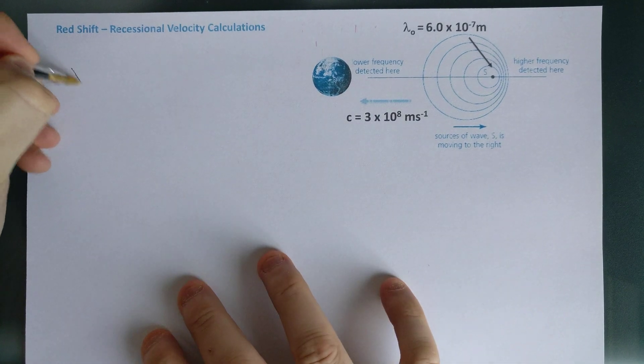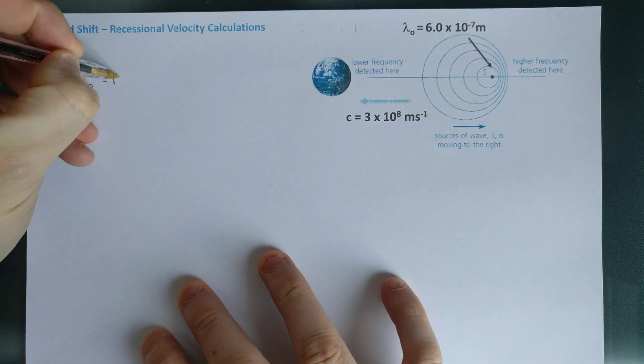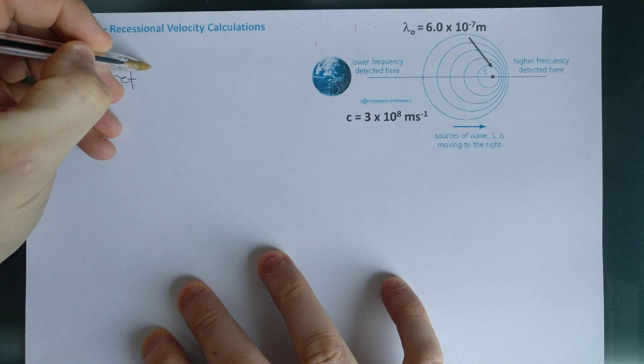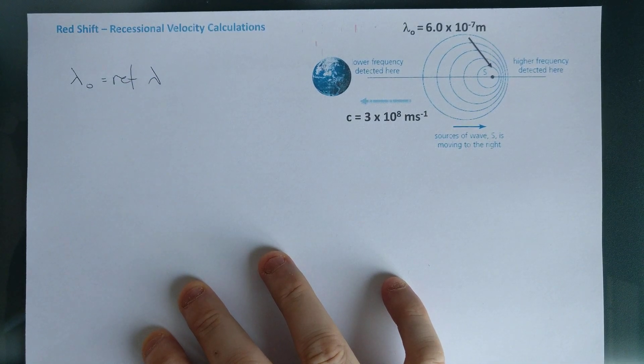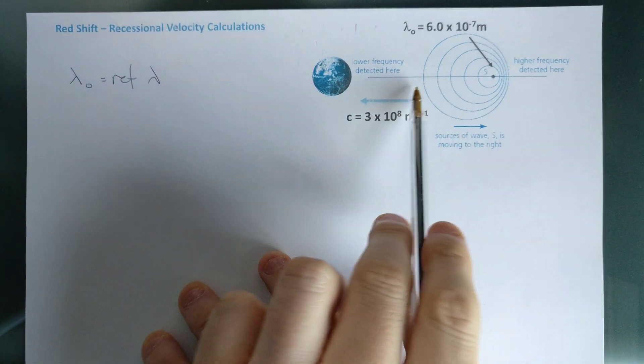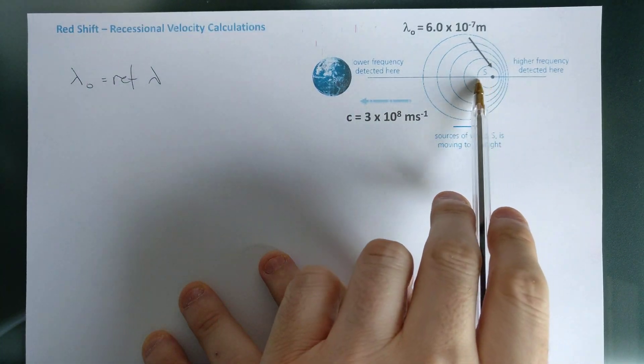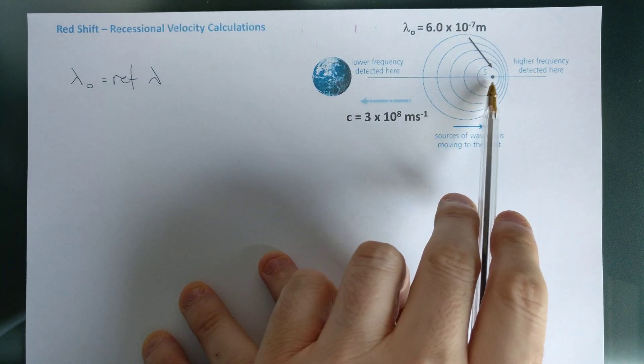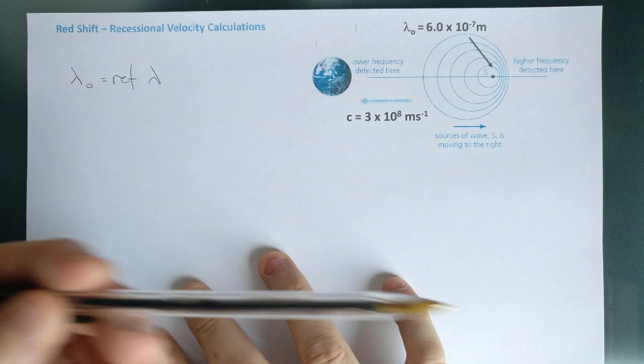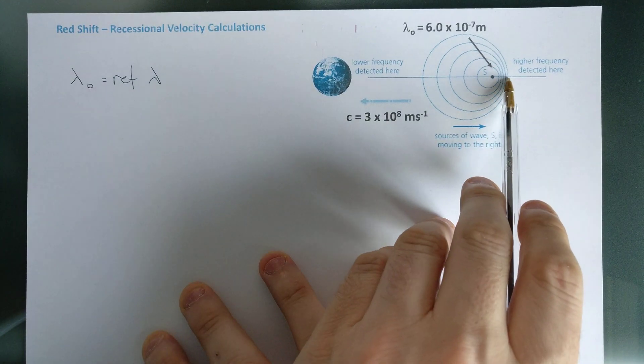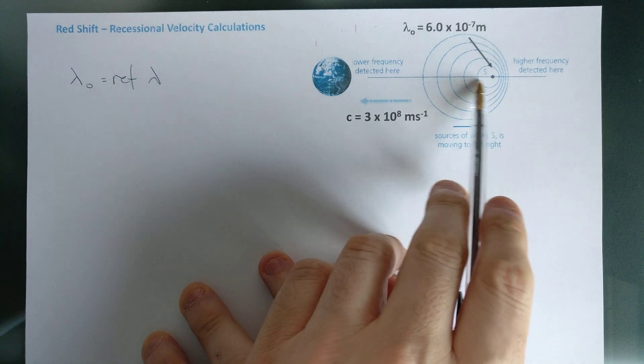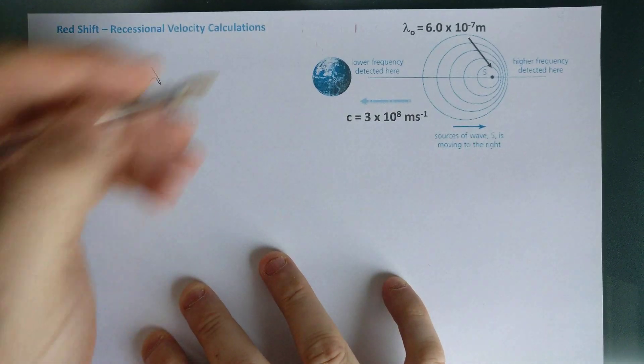So the galaxy is emitting light at what we would call a reference wavelength. I'm going to write down initially lambda naught is my reference lambda. Now the problem is, as the waves come out, you can see what's happening here. In my picture, because the galaxy is moving away, the waves in front get compressed and the waves behind get spread out.